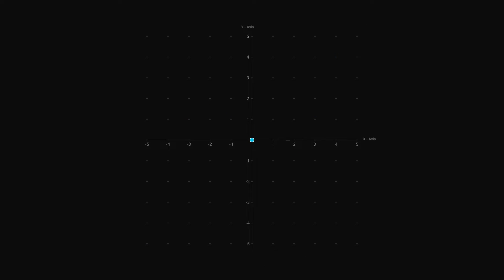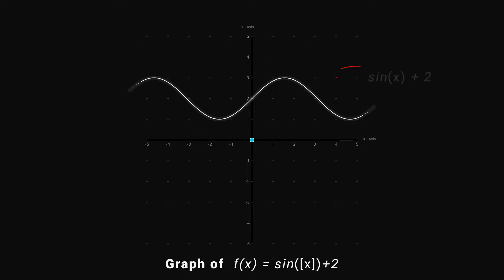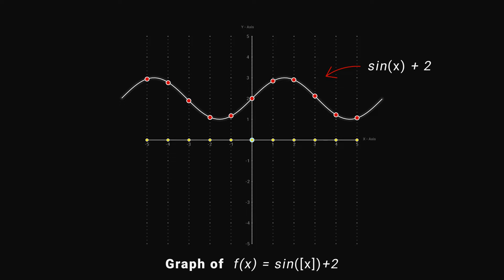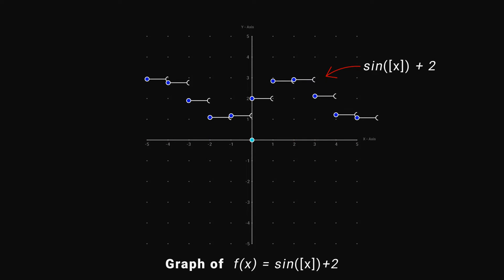Let's take an example. Draw f(x) and draw vertical lines from integer points on the x-axis. Now draw horizontal line segments toward the right from the points where these vertical lines intersect our graph, and we get our answer.